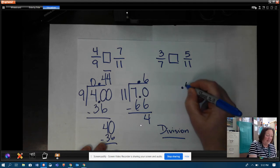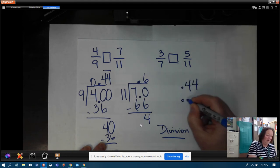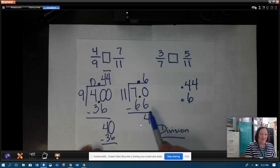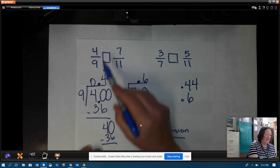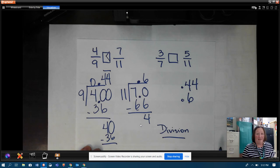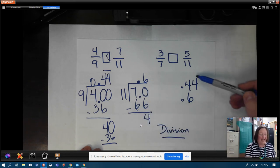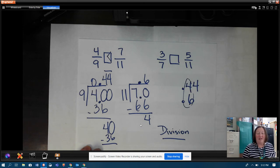Because look, if I line them up by their place value, it doesn't matter what comes after this six, because I can already compare right here. I'm going to compare that four and the six. The four is smaller than the six. So that means that my four ninths is less than my seven elevenths. I've changed them. I've converted them into decimals. And I didn't even have to finish the division problem, because I had enough to compare right there in the tenths place.